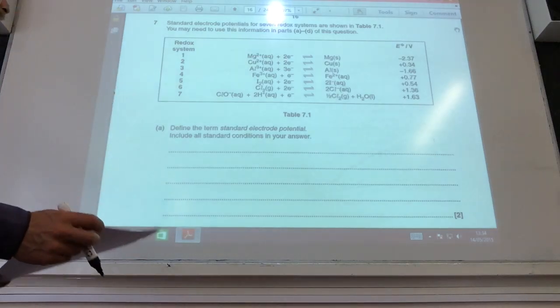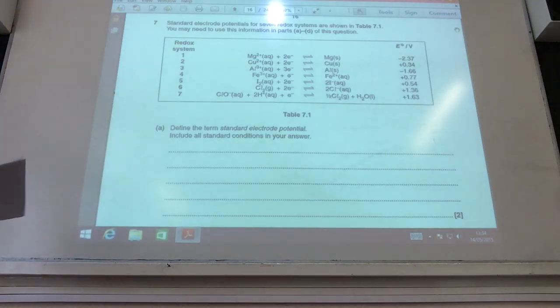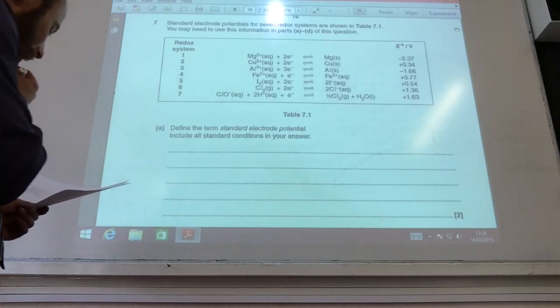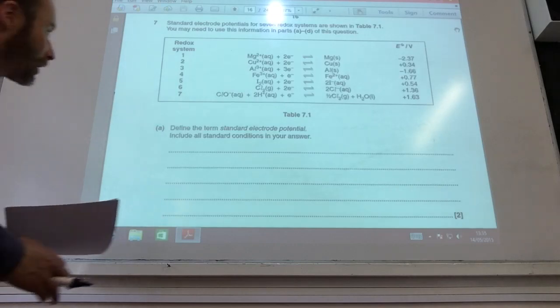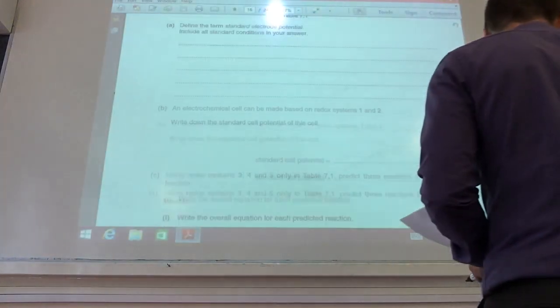Okie dokie, off we go now to question 7. Question 7, first of all, definition of standard electrode potential. This comes up pretty much on every single paper. EMF compared with a standard hydrogen half cell. Standard conditions, 298 Kelvin, 1 atmosphere for gases and concentrations of 1 mole per decimetre cubed. Right, moving on.